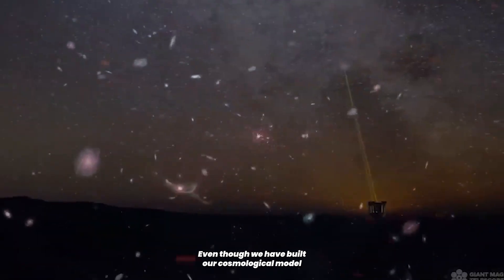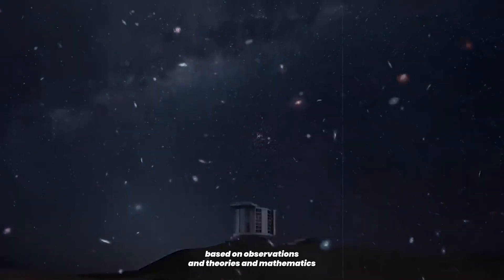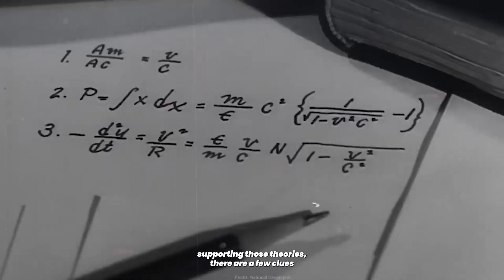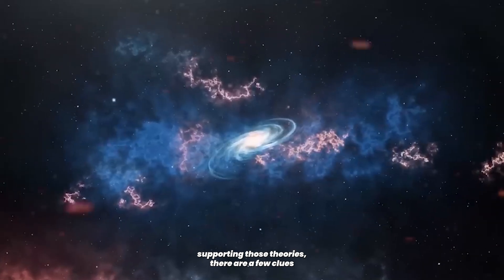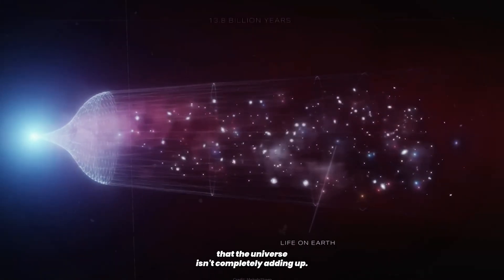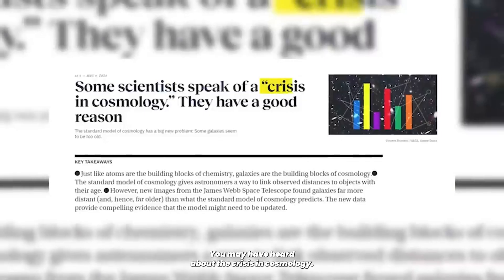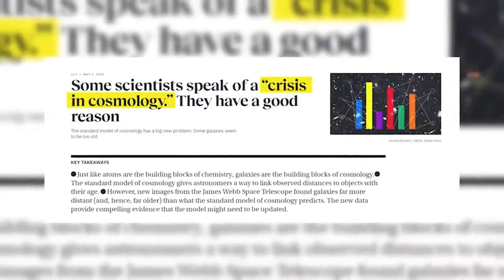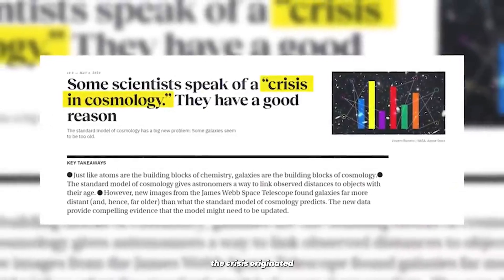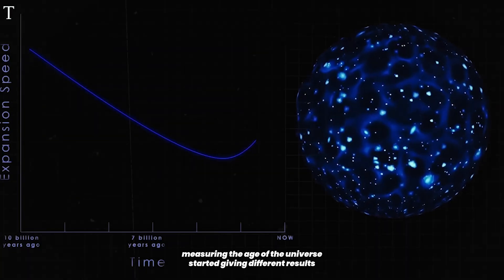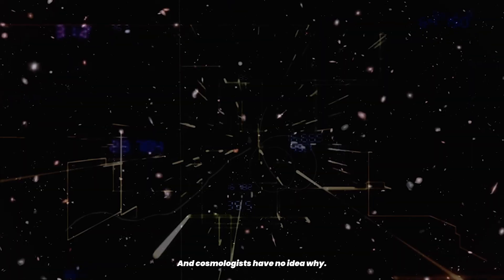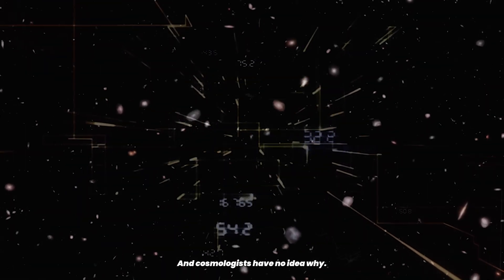Even though we have built our cosmological model based on observations and theories and mathematics supporting those theories, there are a few clues that the universe isn't completely adding up. You may have heard about the crisis in cosmology. Well, basically the crisis originated when different methods of measuring the age of the universe started giving different results, and still do. And cosmologists have no idea why.